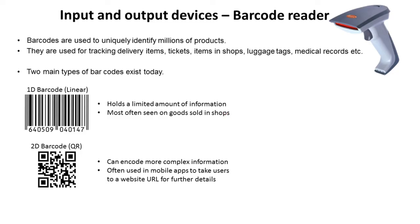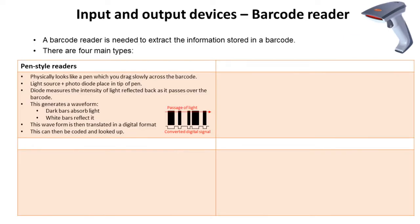The more modern version is a 2D barcode, which we know as a QR or quick response code. This is able to encode more complex information and is often used in mobile phone apps to take users to a website for further information. There are a number of different styles of barcode readers, but they all essentially do the same thing: extract information that's been encoded into a barcode.